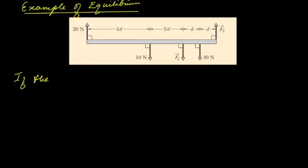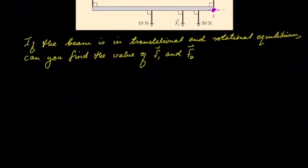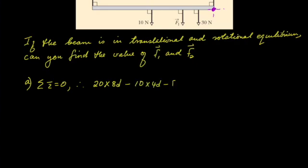Let's take some examples. If we look at this beam and consider it to be in translational and rotational equilibrium, can we find f1 and f2? To do this, we put a reference point at one of the unknowns and say the sum of the torques will be equal to zero. Therefore, 20 times the distance to the reference position, which is 8d, minus 10 times 4d, minus f1 times 2d, minus 30 times d. This must be equal to zero.